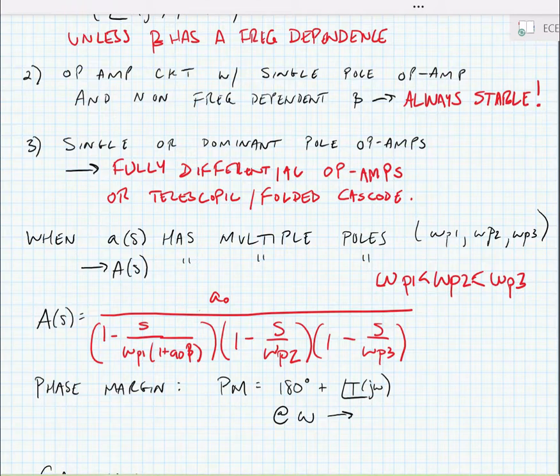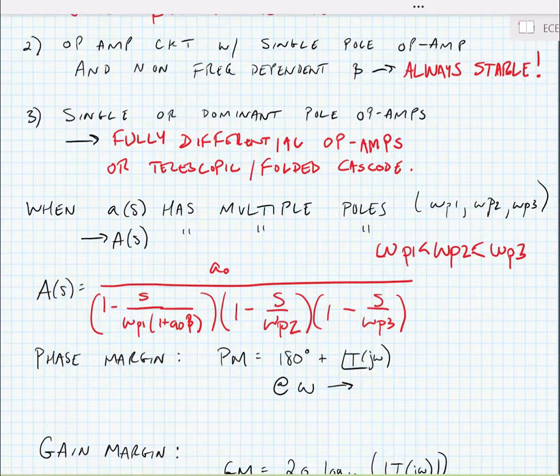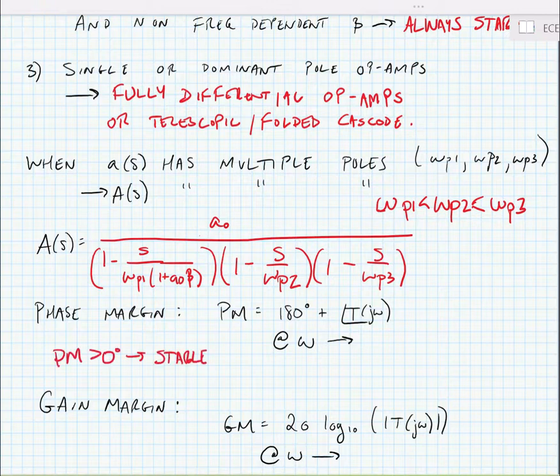Now, we have a concept of phase margin to be able to evaluate whether or not the amplifier is stable. If the phase margin is greater than zero degrees, the amp is stable. However, even a stable amplifier might ring if it's input with a step response.